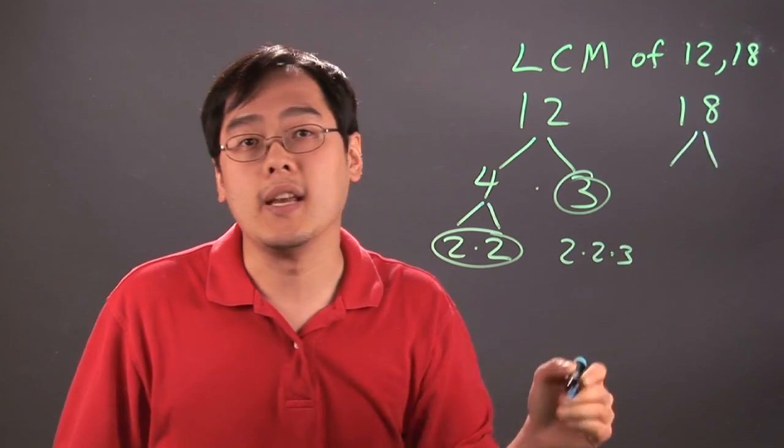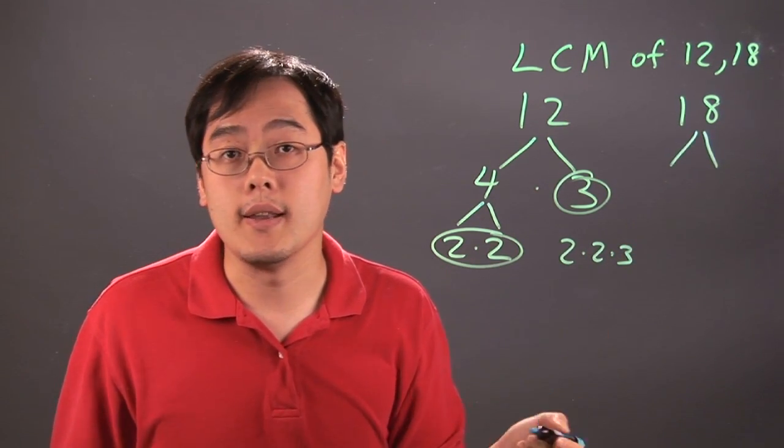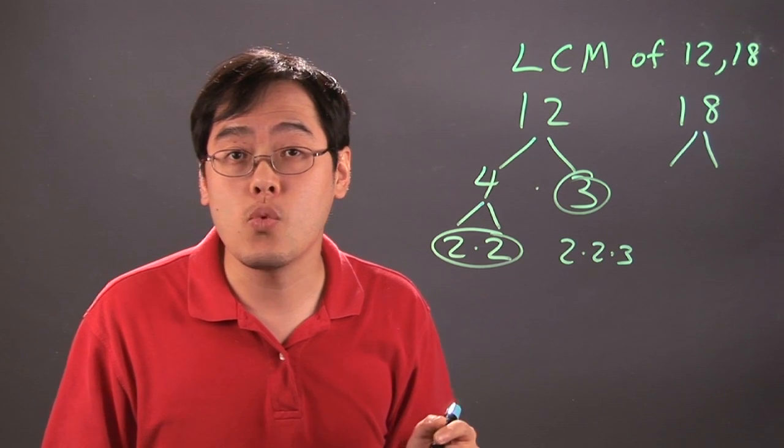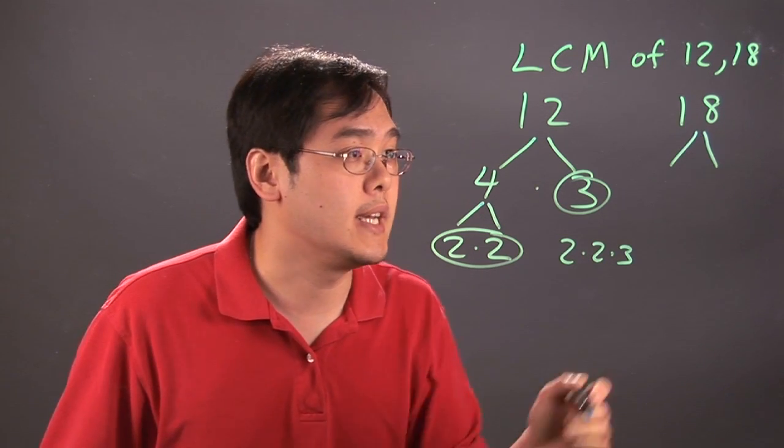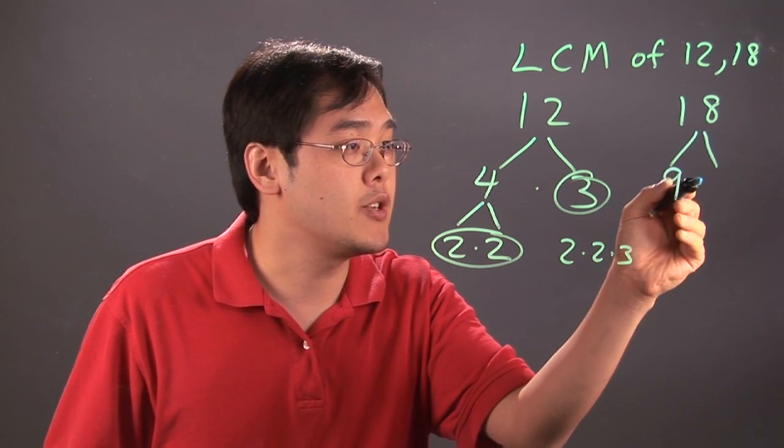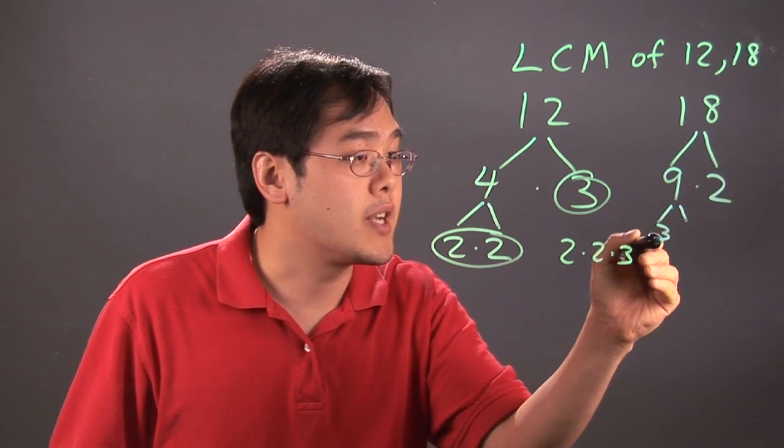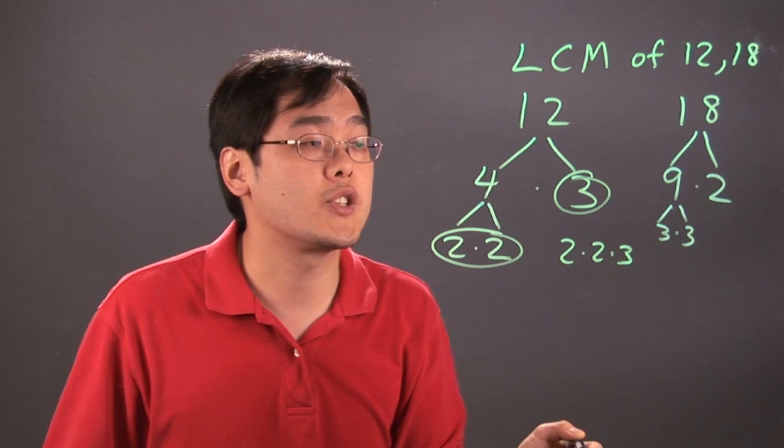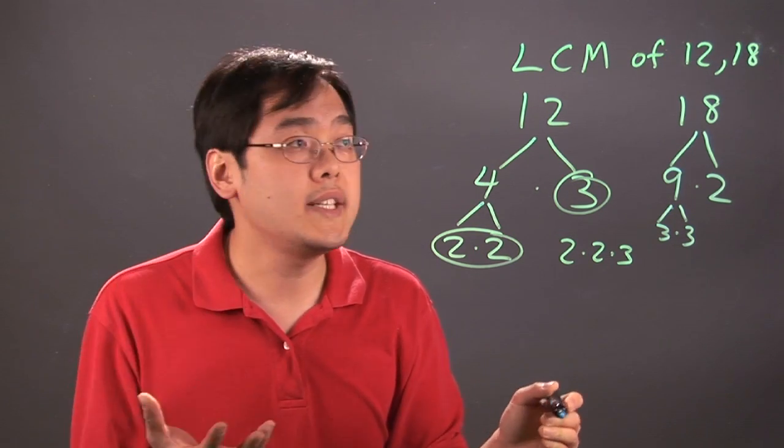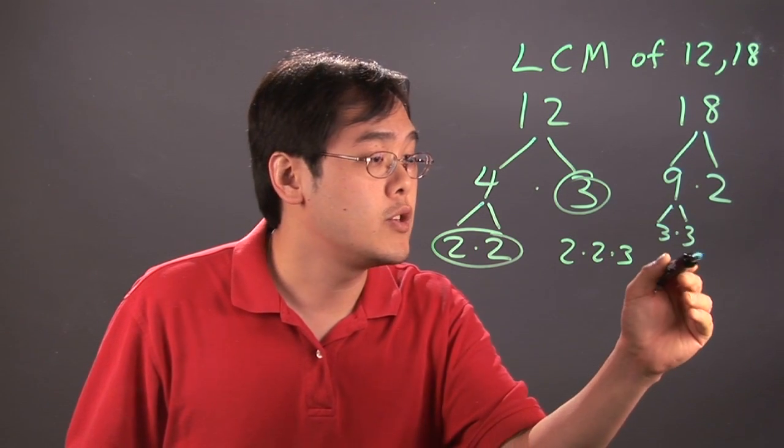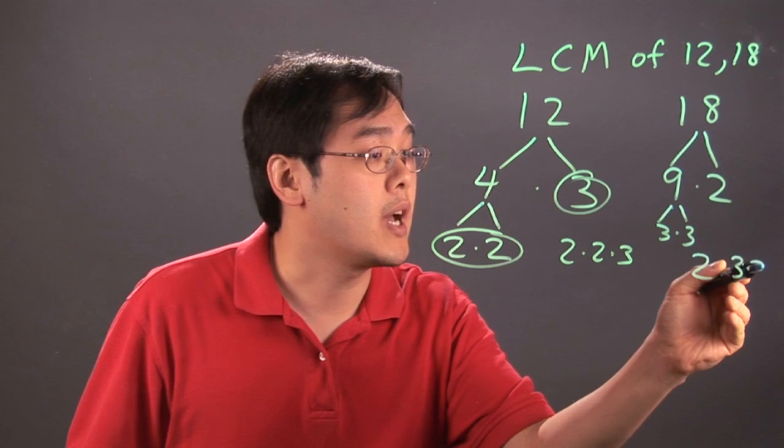You're going to do the same thing with 18. You're going to break down 18 in any first way that you want. Any two numbers multiply to give you 18. Some people will think of 9 times 2 and go from there. Now 9 can be thought of as 3 times 3, but the 2 is about as good as it gets. So 18 can be written as 2 times 3 times 3.